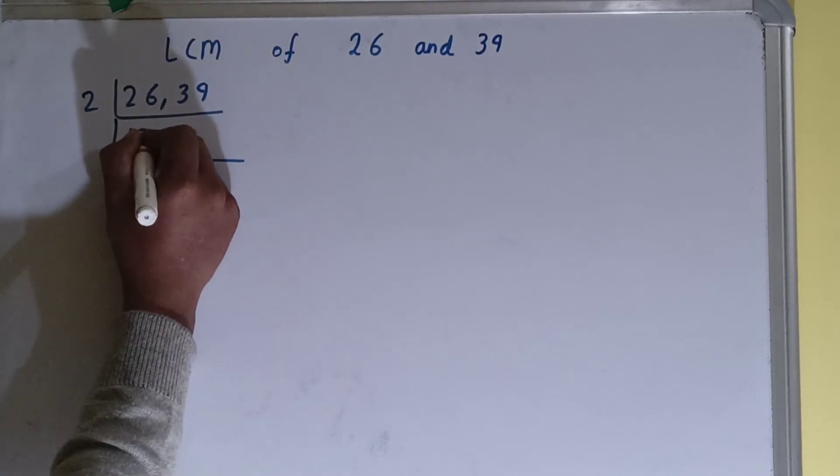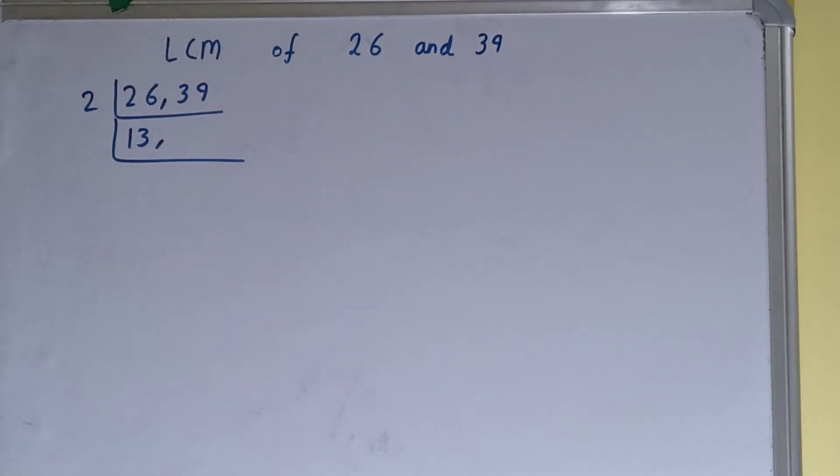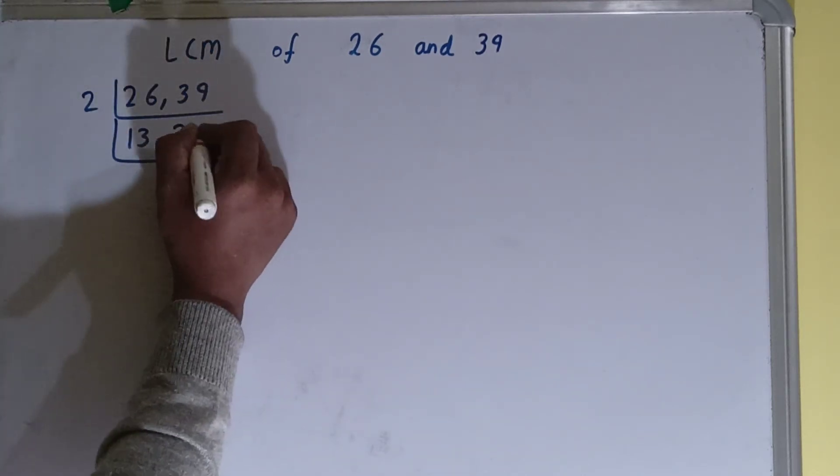So this number on dividing will become 13. The second number 39 is not divisible by 2, so we'll just copy this down and not touch it.